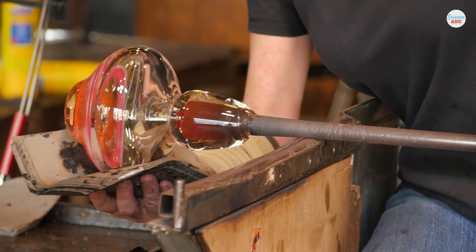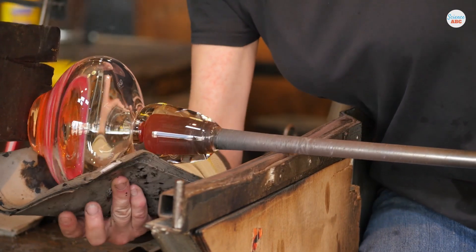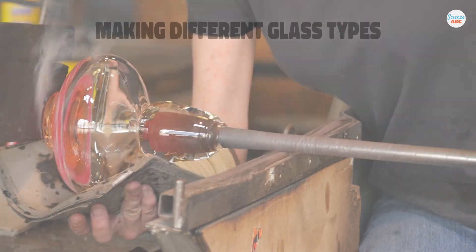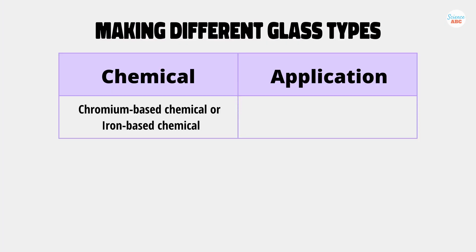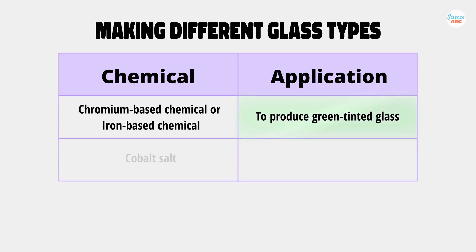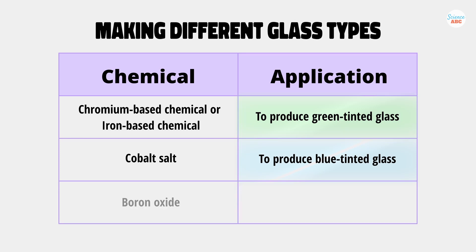In a bid to make different types of glass, commercial glass manufacturers often use slightly different glass manufacturing processes. This change often comes through adding other chemicals. For example, chromium or iron-based chemicals are added to the molten sand mixture to make green-tinted glass, whereas mixing in cobalt salt produces blue glass. To make oven-proof glass, boron oxide is added to the molten mixture.